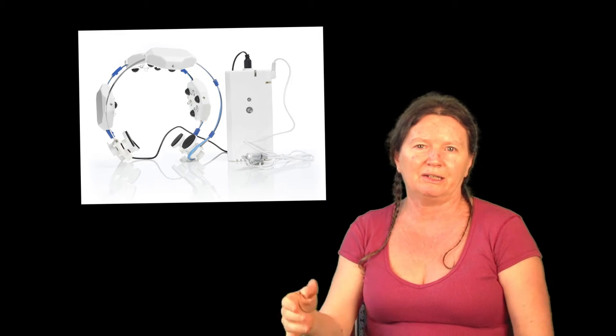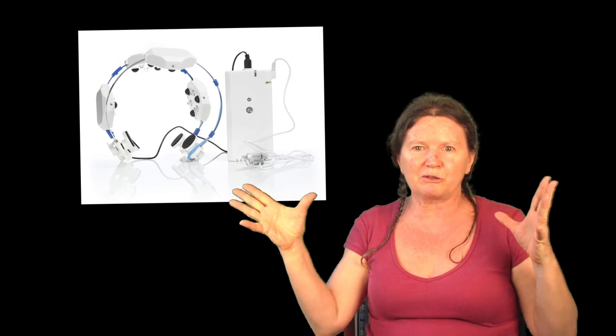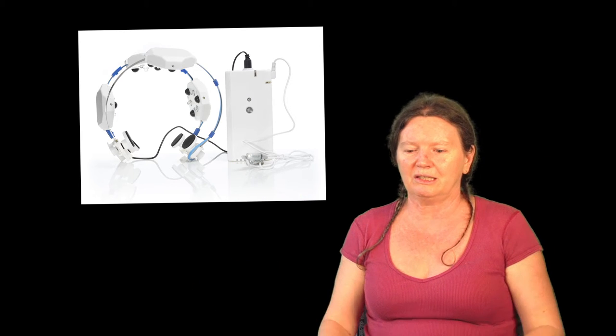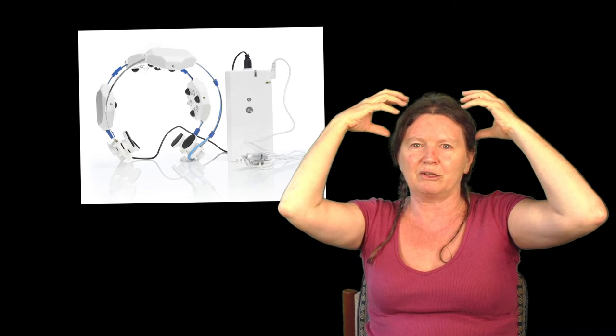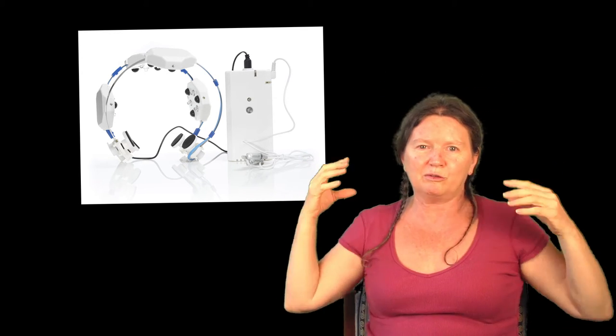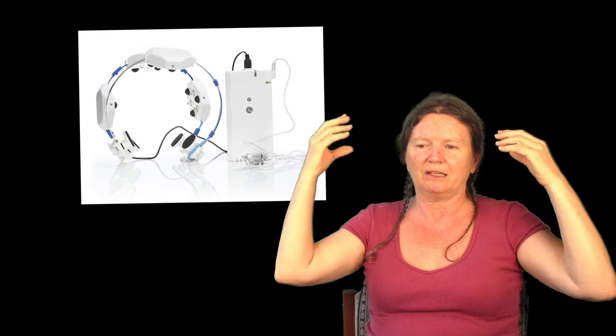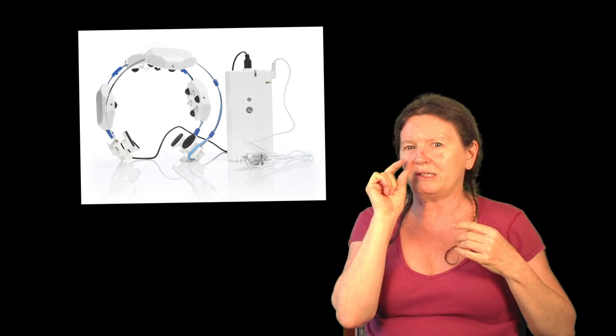This near infrared transcranial helmet flashes the near infrared right into your brain through the skull plates, and then the intranasal clip.